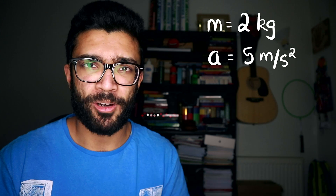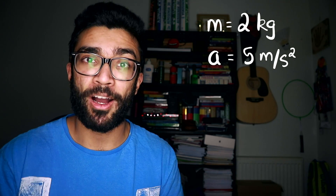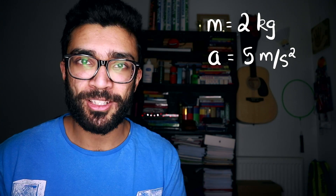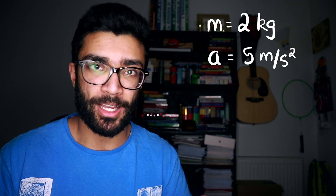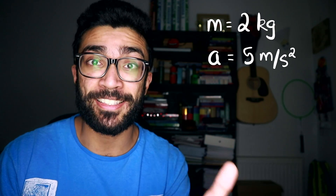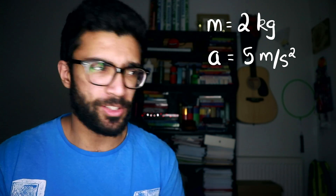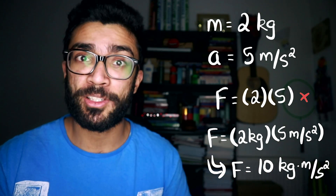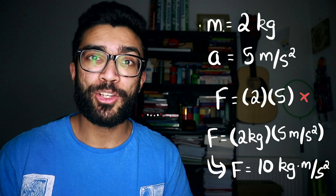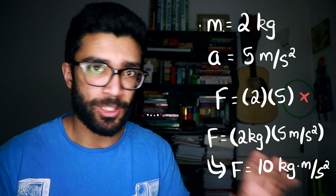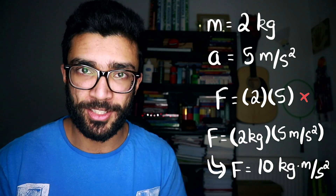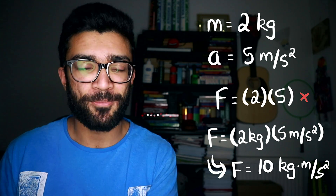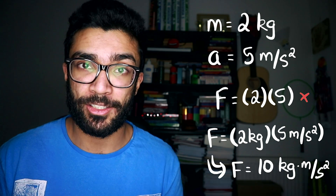If we stick our units in with our calculation — instead of just saying two times five, we say two kilograms times five metres per second squared — and we treat the units like a component of the calculation, multiplying all the numbers together and all the units together, we get ten kilograms metres per second squared, which we know is the same as a newton.